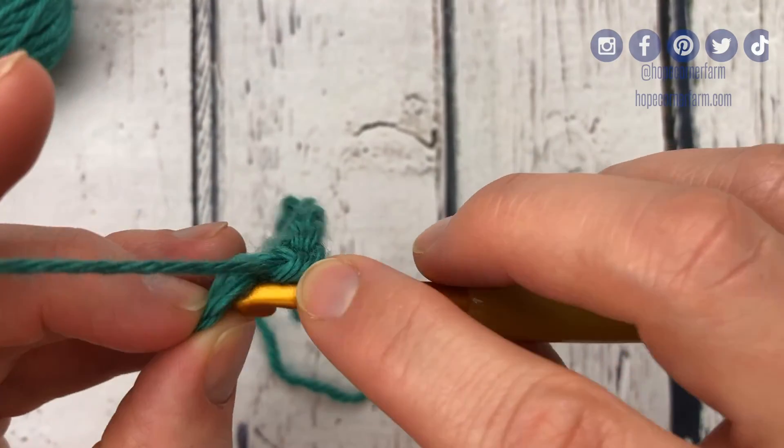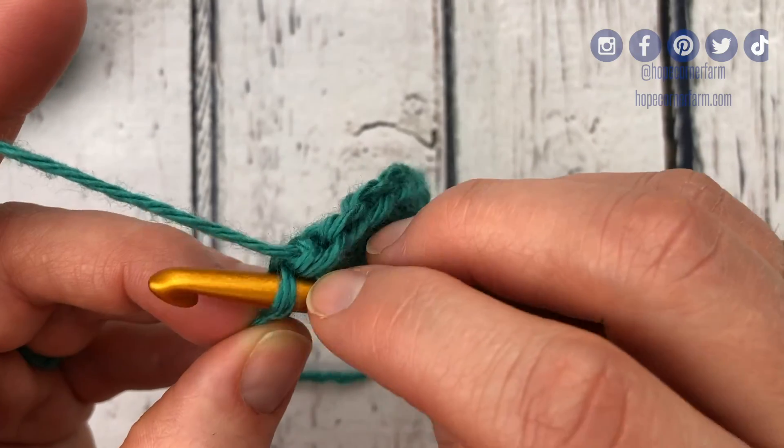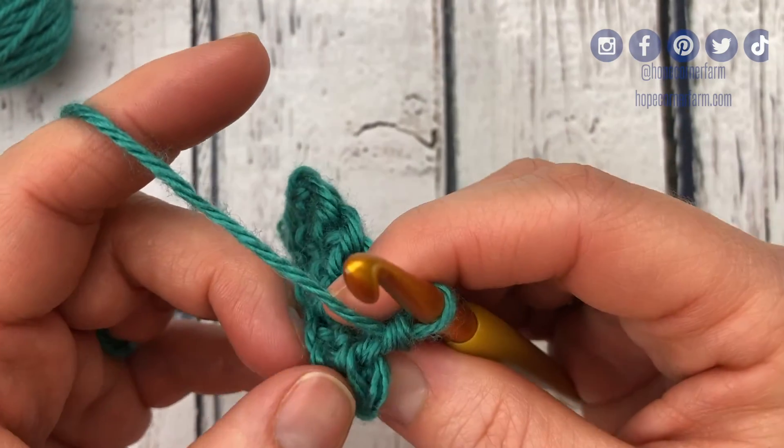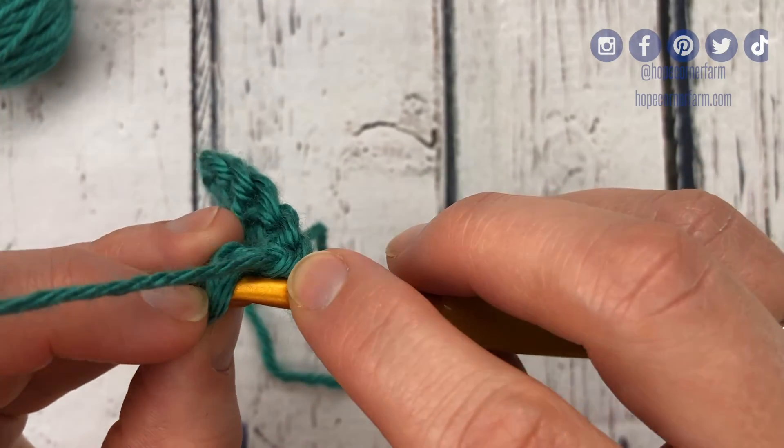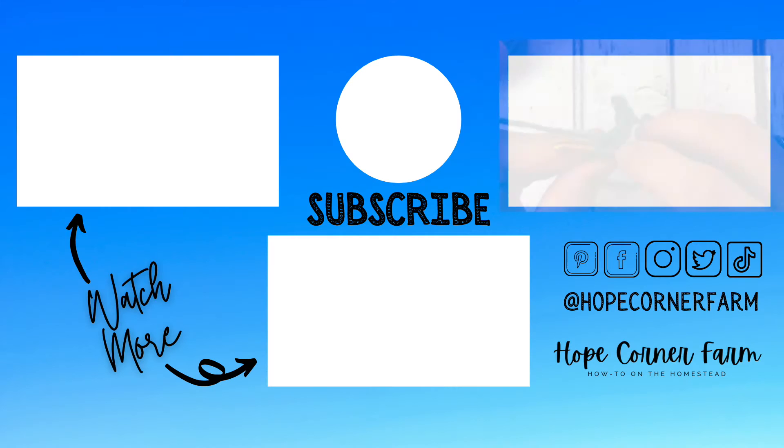On this last one, sometimes your hook is only gonna want to pick up one of those legs. You really need to make sure you get both of those legs from that previous single crochet here. We're gonna push into there, making sure we get two legs.